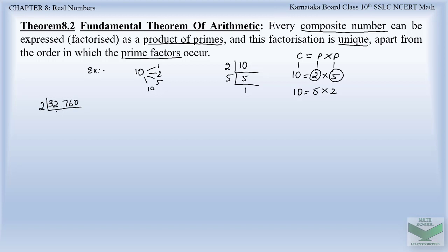Let us divide by 2, since that is the least prime available. Dividing 32,760 by 2 gives 16,380. Again we divide by 2 because the last digit is 0 — any number that ends with 0 or an even number is divisible by 2 — giving 8,190. Dividing again by 2 gives 4,095. Now the number ends with 5, so it is no longer divisible by 2, and we move on.